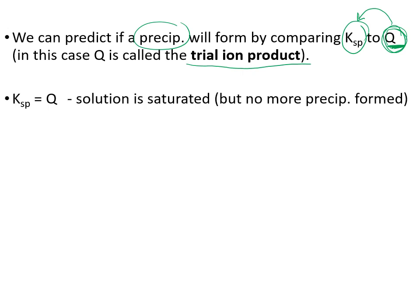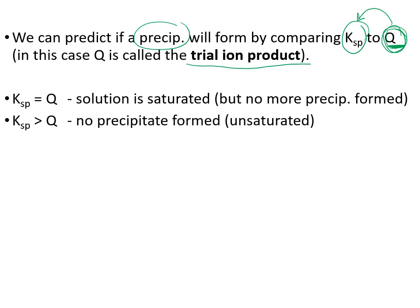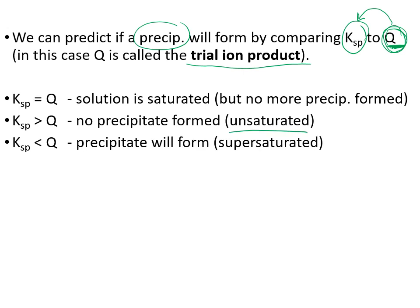If the Q value equals Ksp, we have a saturated solution — no precipitate will form because it's right at the balancing point with just the right amount of ions. If Q is smaller than Ksp, no precipitate forms; the solution is unsaturated and could hold more ions. If Q is larger than Ksp, the reaction shifts to the left, forming a precipitate because the solution is supersaturated.